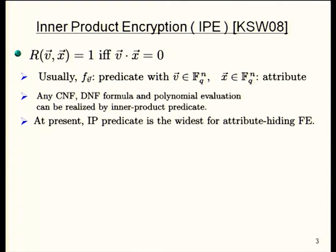At present, this predicate has interesting properties — it is the widest for achieving attribute-hiding security. Attribute-hiding, roughly speaking, means hiding not only the message but also the attribute from the attacker. That property is useful for, for example, searchable encryption and other applications.